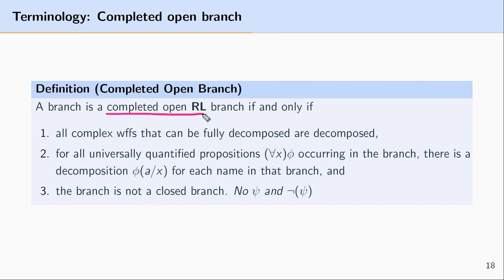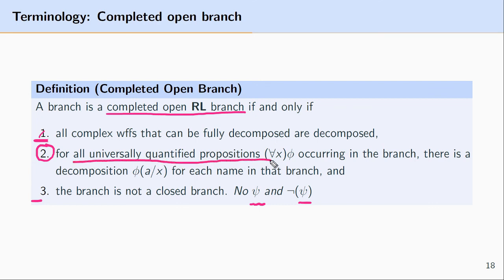The goal of this video was to explain what a completed open predicate logic branch is: a branch satisfying three conditions — first, all complex well-formed formulas that can be decomposed have been decomposed; second, there is no formula and its literal negation; and most importantly, whenever there is a universally quantified formula in the branch and names present, we must decompose that universally quantified formula for every name found in the branch.